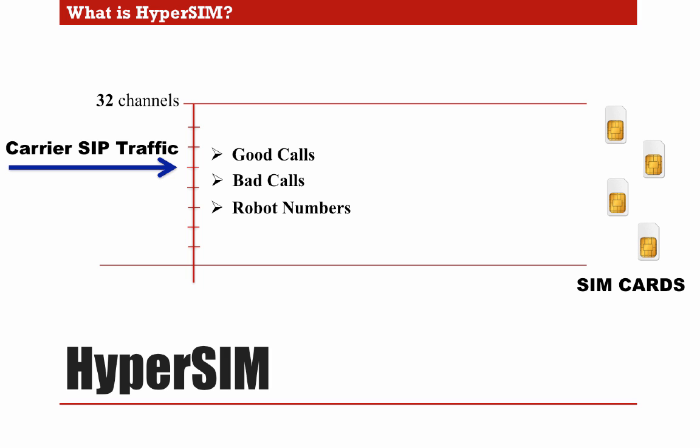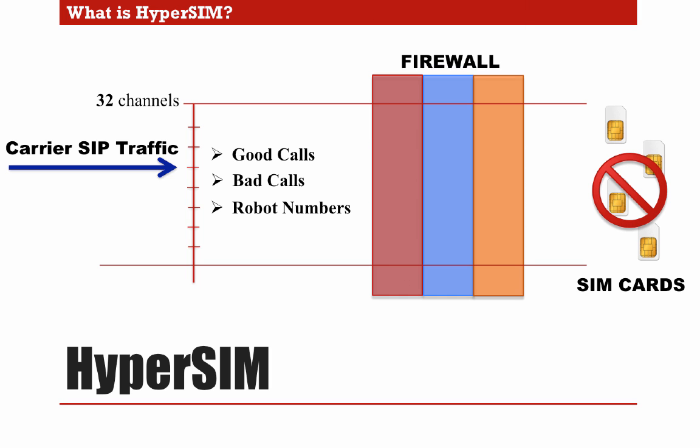The problem begins when all these types of calls are being dialed out of our gateway, causing the SIM cards to be blocked. The client sending you the traffic may have a least-cost routing configuration on his switch, making it very difficult to know from which of them this bad traffic or robot numbers comes from. HyperSIM creates a strong layer of protection comprised of three elements to help the SIM cards last longer.